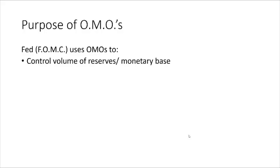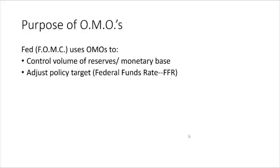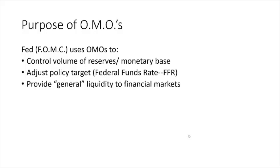The Fed can control the volume of reserves in the economy, or the monetary base. By controlling the volume of reserves in the monetary base, the Fed can move the policy target around — which is the federal funds rate. That is the rate at which banks borrow and lend reserves from one another to meet their reserve requirements established by the Fed. The Fed also provides liquidity to financial markets through open market operations, above and beyond targeting the federal funds rate.